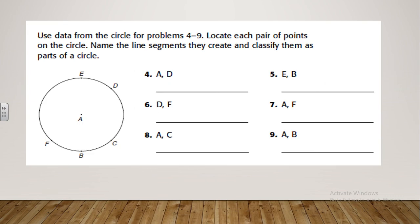Let's continue. The shape is given and you need to name each part. Let's look at AD — from A to D. This line starts from the center and ends at a point on the circle, so that will be the radius. Great job. What about the next one, EB? From E to B — this line crosses the center, so that will be the diameter.